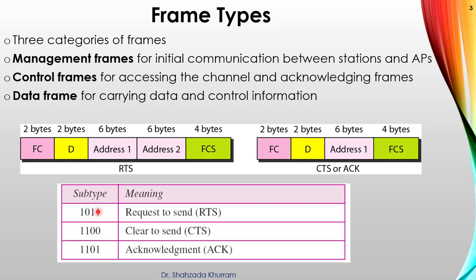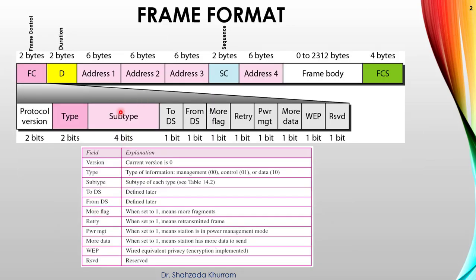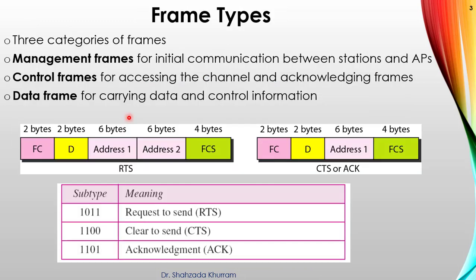Here is the subtypes. There is only four bits used. If you capture the frame and if you see in a subtype is one zero one one, it means it's a request to send frame. Okay, so these both frames used for best to send, we use a source destination and destination to source for clear to send. And last one is acknowledgement.